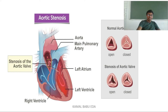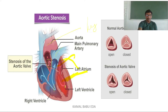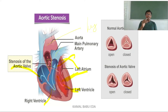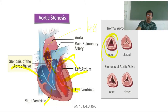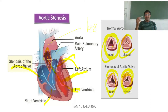Looking at the diagram: this is the arch of aorta, and this is the main pulmonary artery carrying deoxygenated blood away from the heart towards the lungs. The aortic valve is situated at the opening of the arch of aorta, allowing blood from the left ventricle to enter the aorta and preventing backflow. During aortic stenosis, the valve cannot open or close fully, disturbing blood circulation between the arch of aorta and the left ventricle.